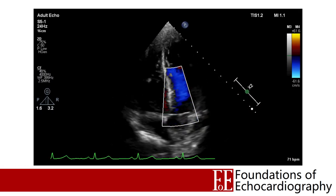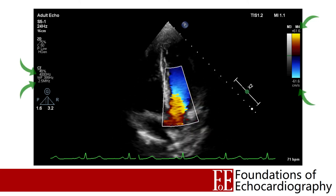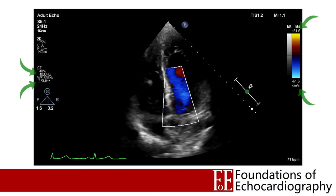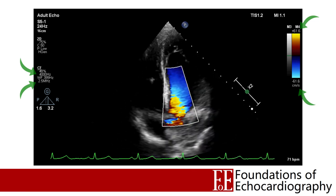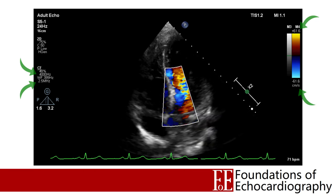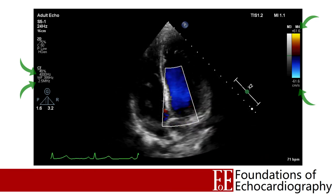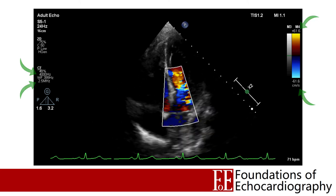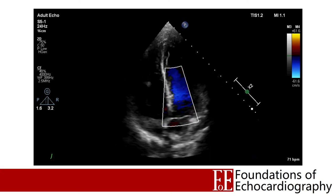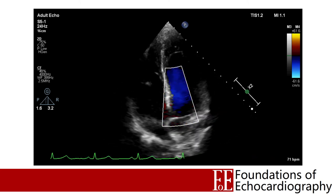Here's another apical 5 chamber view taken from a healthy volunteer. On the left-hand side of the image our transmitted wave has a frequency of 2.5 MHz and our pulse repetition frequency is 4000 Hz. Looking at the scale on the right-hand side of the image, the maximum discernible velocity in either direction is 61.6 cm per second. Let's freeze our image at end diastole and then advance frame by frame, watching the blood as it travels from the left ventricle down into the left ventricular outflow tract and passes through the open aortic valve. This is blood moving away from the probe, so it has a negative velocity and we'd like the ultrasound machine to demonstrate this blood flow using the blue part of the colour spectrum.